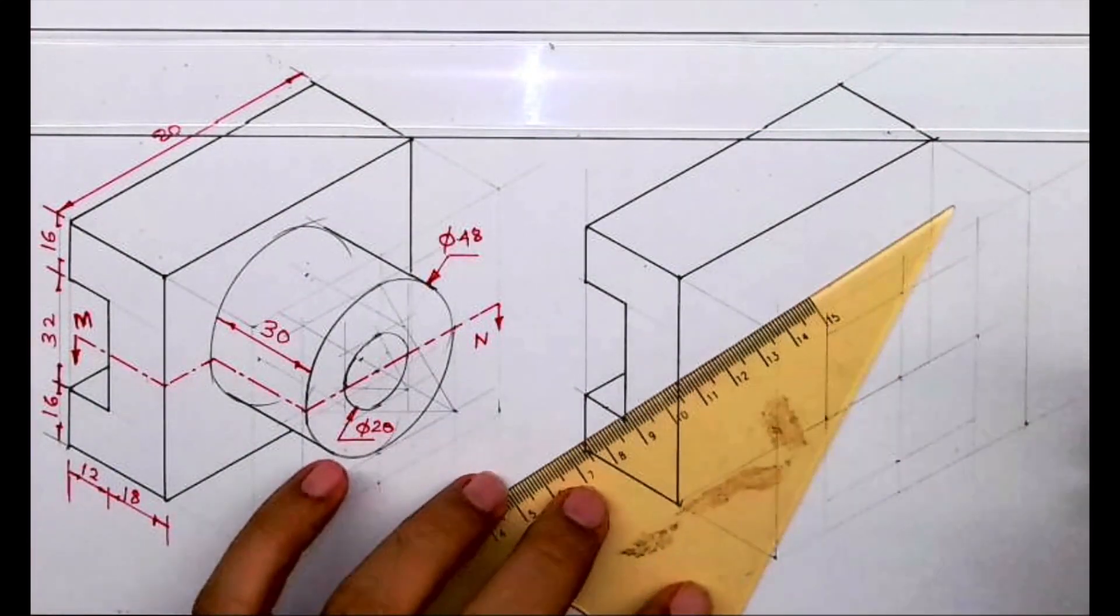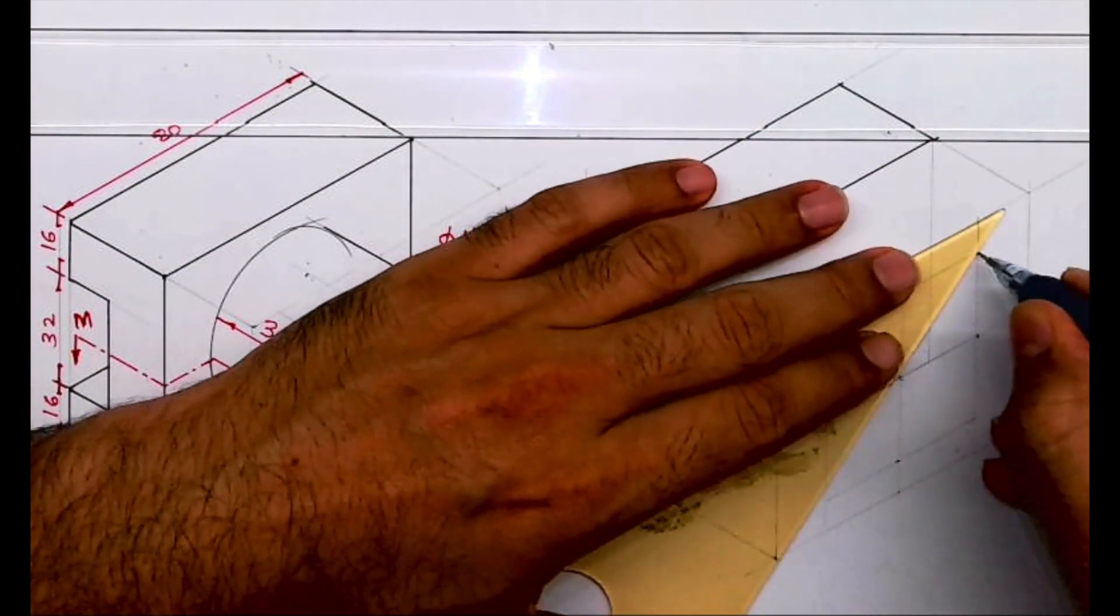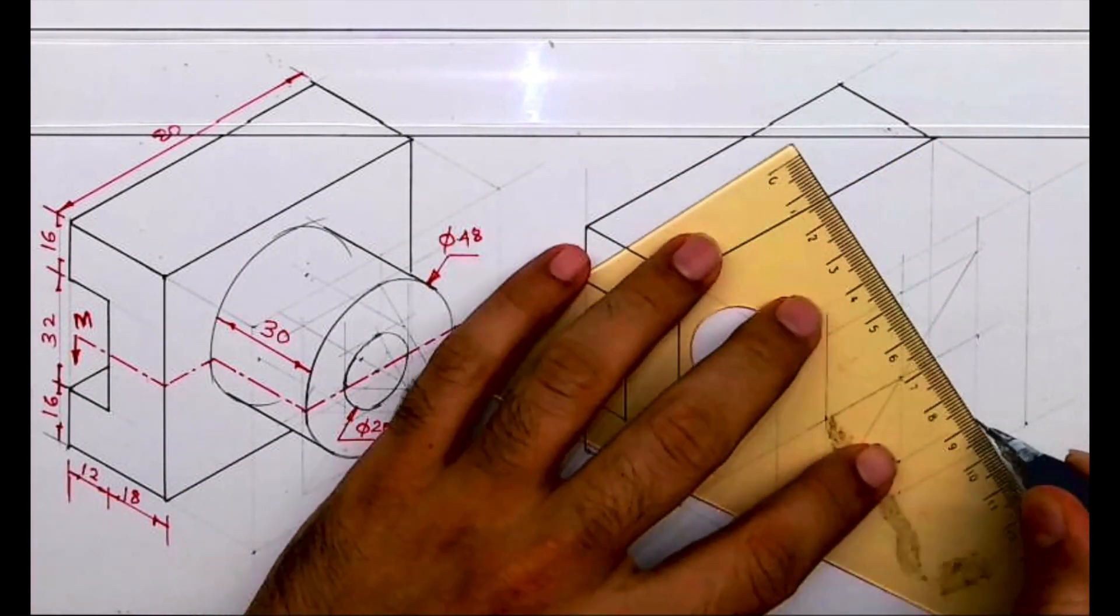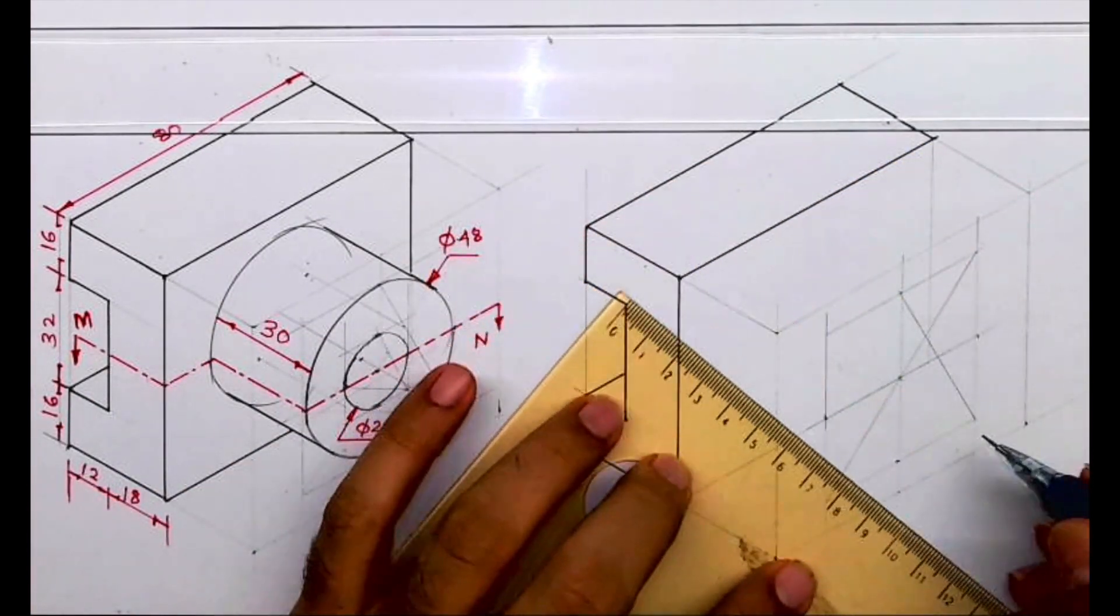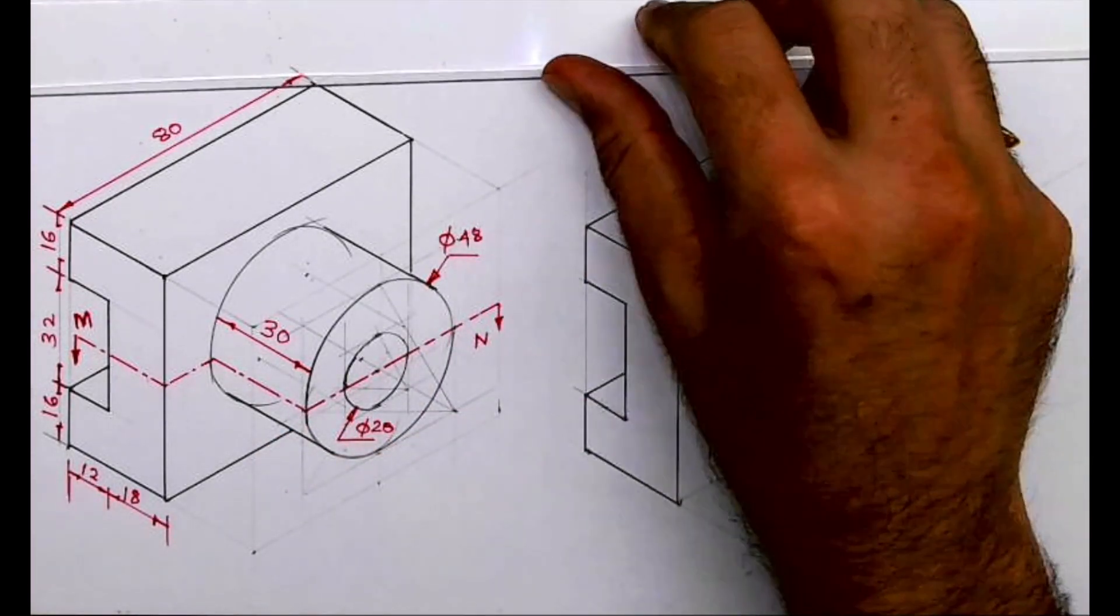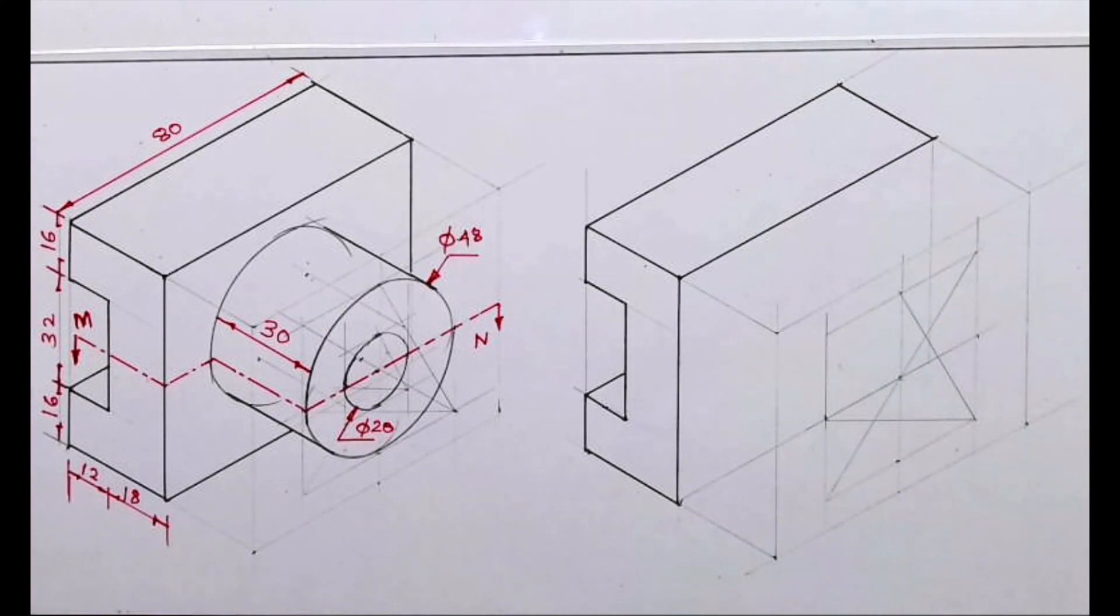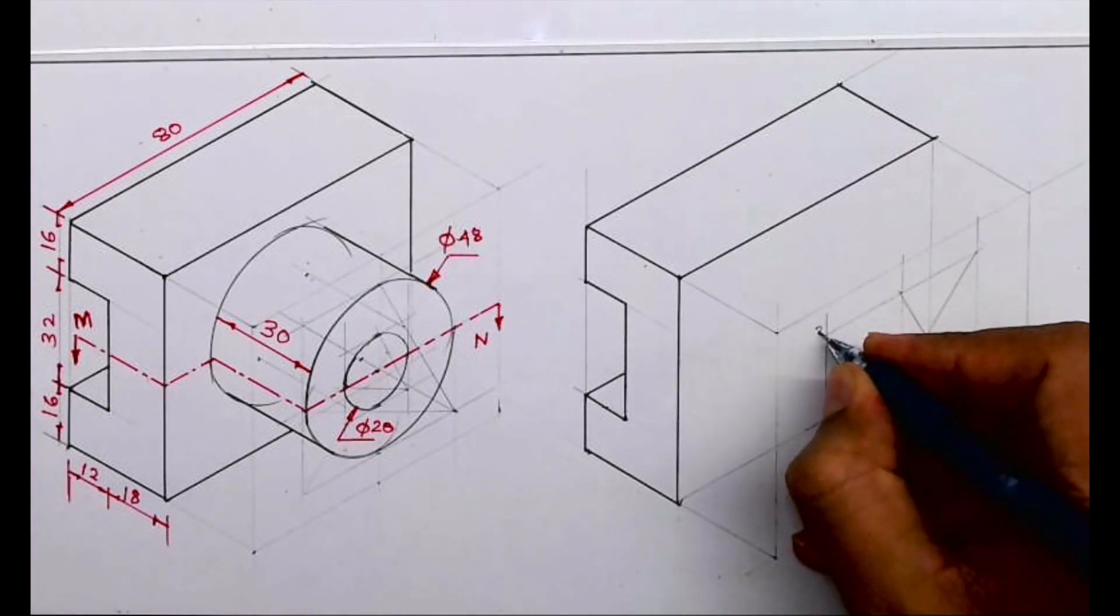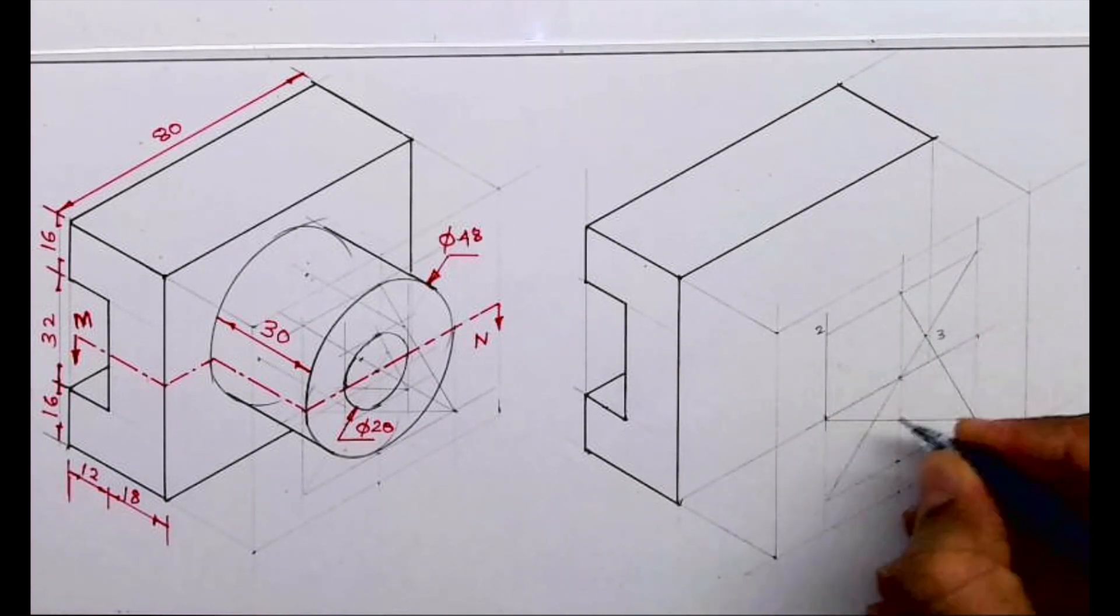So we will draw this rhombus, and this is point 1 to M. So we are drawing a circle by four-center method. This is one, two, three, and four.